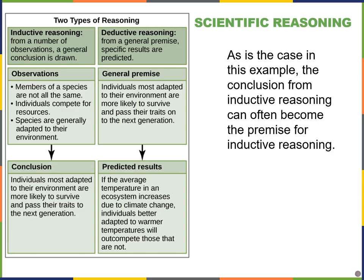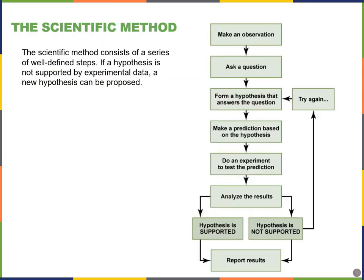Inductive reasoning goes from specific to general, and if those general conclusions become well accepted by the scientific community, they might become the theory or law that serves as the general premise for a study using deductive reasoning. In all of our science experiments and labs, we'll be using the scientific method or some close variation of it. It's important to be able to list all of the basic steps in their correct order — it's a very common test question, not only in our class, but on many standardized exams.